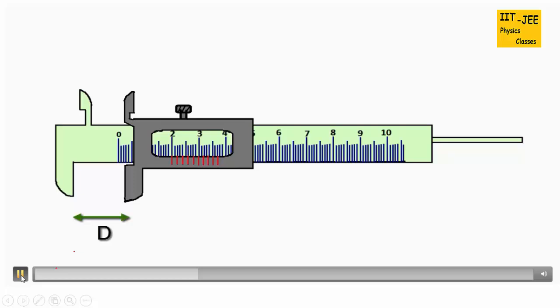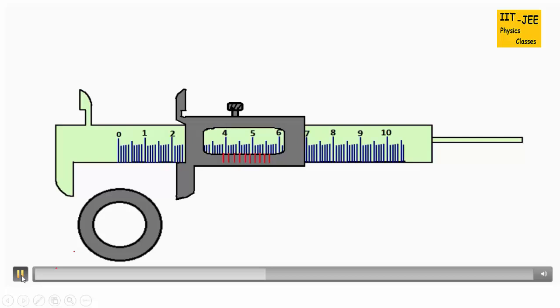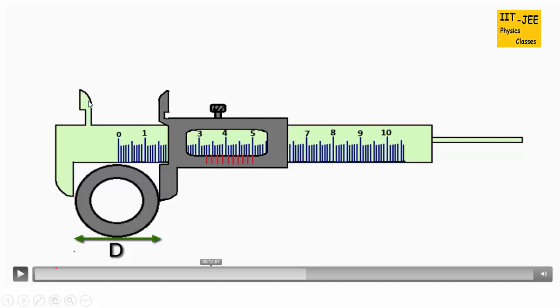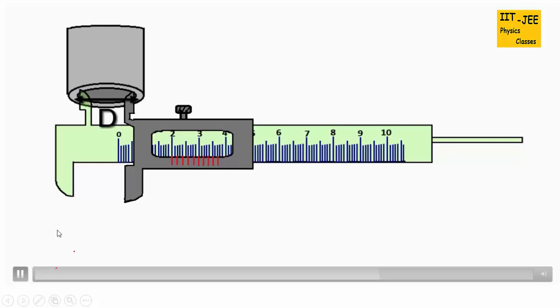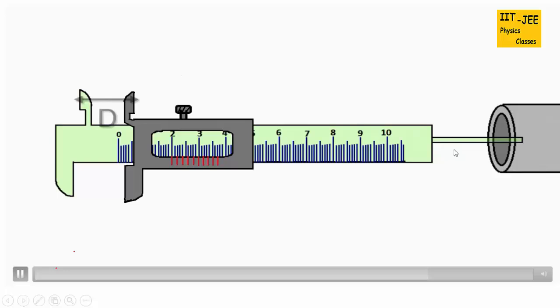There are 2 upper jaws. One is connected with main scale and the other is connected with the vernier scale. We put the object around these 2 parallel sides and then we can measure internal diameter of a hollow cylinder. There is a long thin stripe which is connected to the back side of vernier caliper. It is used to measure the depth of a hollow cylinder.